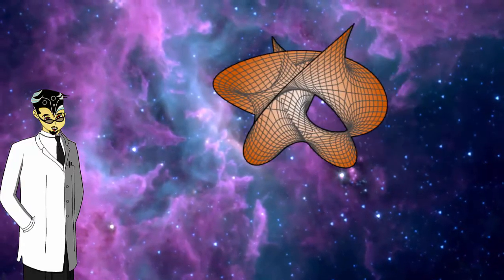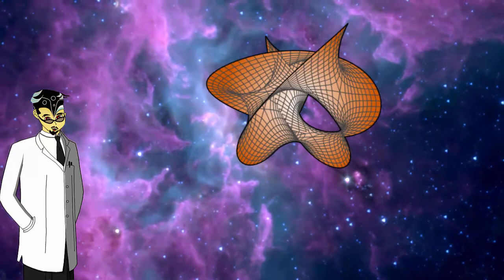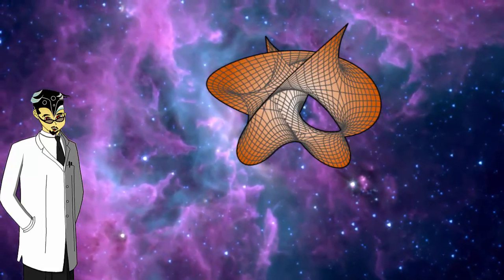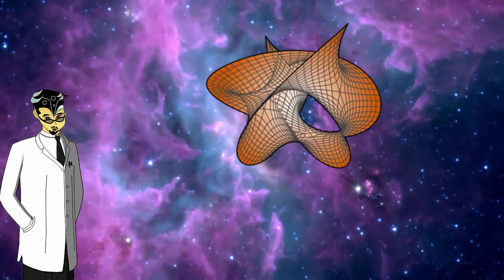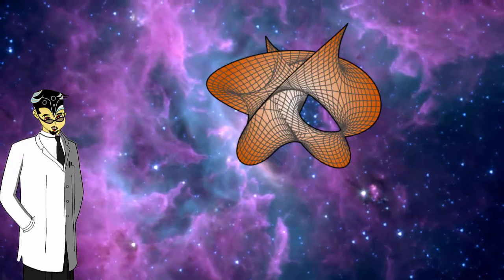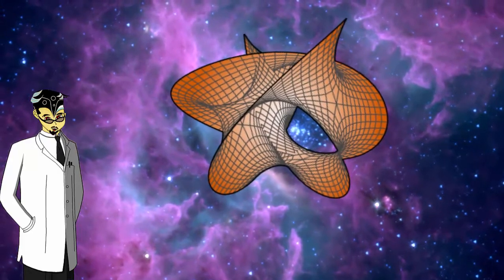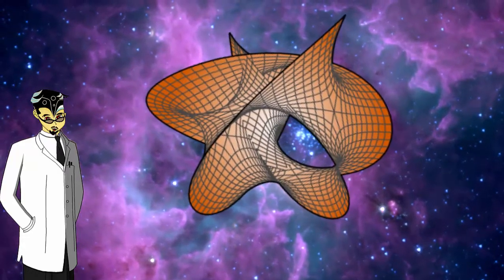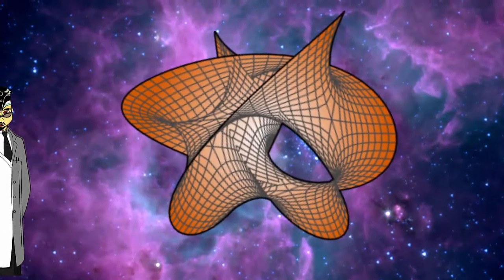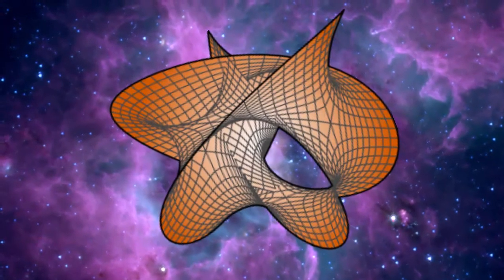What the Calabi-Yau manifold is, is a three-dimensional representation of multi-dimensional space. What the Calabi-Yau manifold represents is if dimensions higher than five, higher than six, higher than seventh dimension exist, why can't we see and interact with those dimensions?